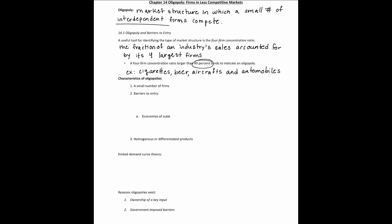Now let's talk about the main characteristics of an oligopoly. We've talked about the characteristics of a perfectly competitive industry and a monopolistically competitive industry, so now let's talk about oligopolies. With oligopolies, there are a small number of firms. There are also barriers to entry — anything that keeps new firms from entering an industry where existing firms are making economic profits.